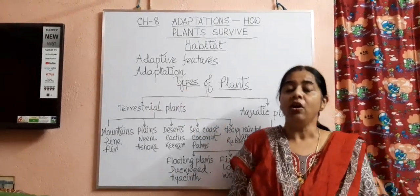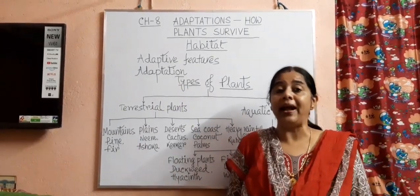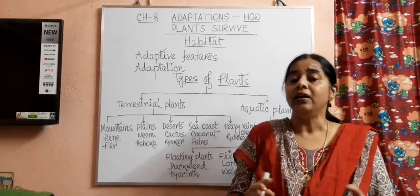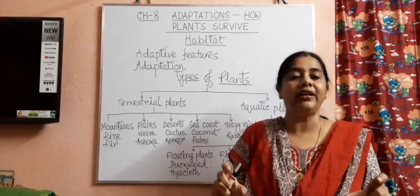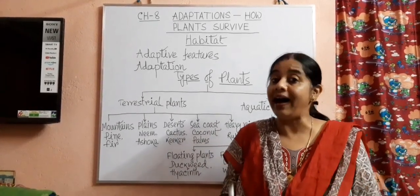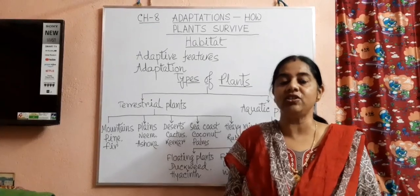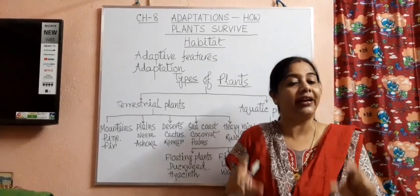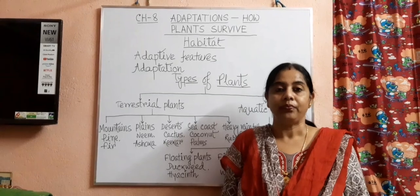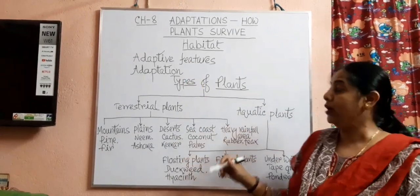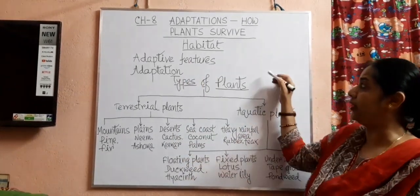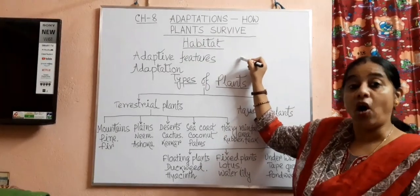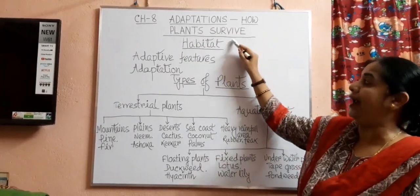When any living body — plant or animal — can survive in its habitat with the help of its adaptive features, that is known as adaptation. All the plants, animals, insects — all living bodies on this earth's surface — have some special features or adaptive features. In this chapter, we are going to study about the special features or adaptations of plants.